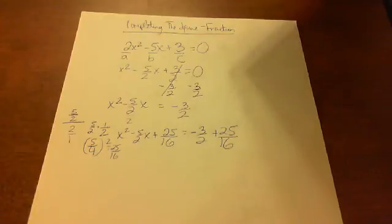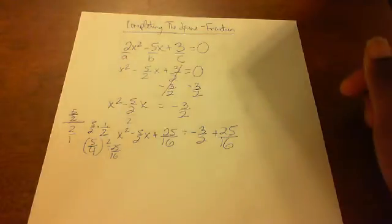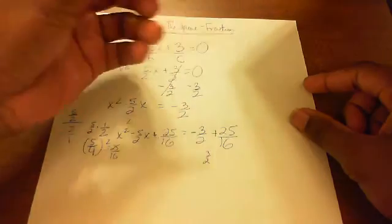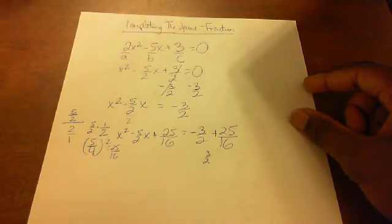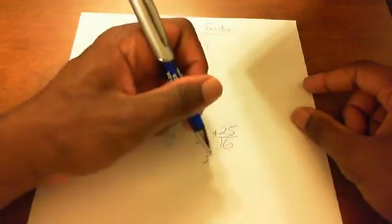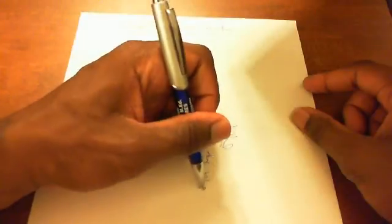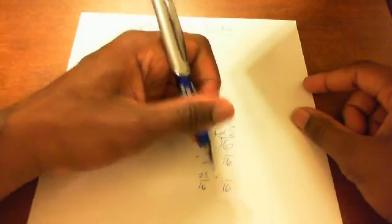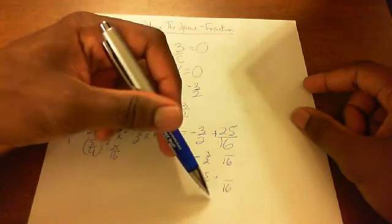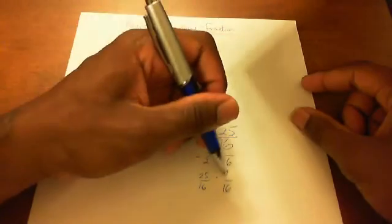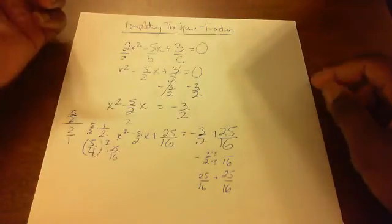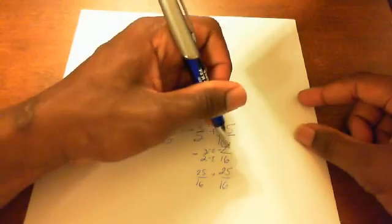But we gonna bring it up to the front real quick. So here we go. We'll take 3/2, I'm gonna simplify it right here. The common denominator between 3/2 and 25/16 is obviously gonna be 16. So 16 goes into 16 one time, 2 goes into 16 eight times, so we multiply the numerator by 8. 3 times 8 is 24, so we get negative 24/16.